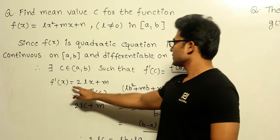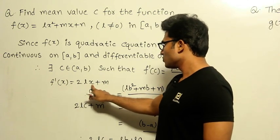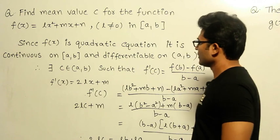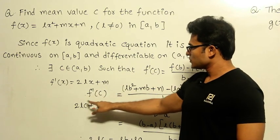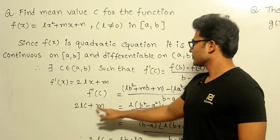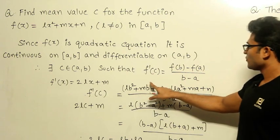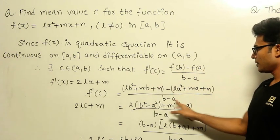Now what about f'(x)? f'(x) is going to be 2lx + m. So f'(C) is going to be 2lC + m, which equals [f(b) - f(a)]/(b - a).